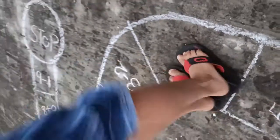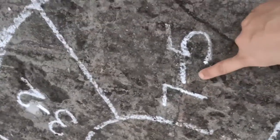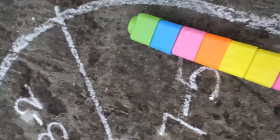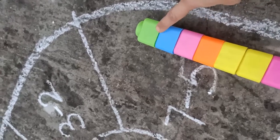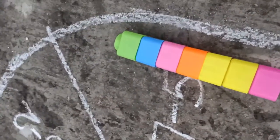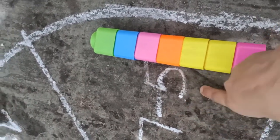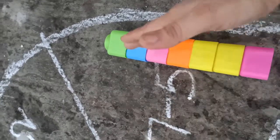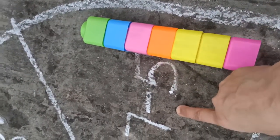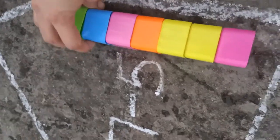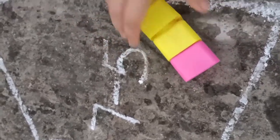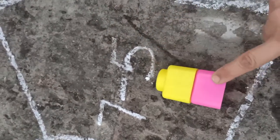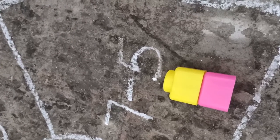So jump in the next box. यहाँ पर क्या लिखा है? Seven minus five. So minus — सबसे पहले हमने sign देखने हैं ना, minus का. So minus means हमने take away करने हैं, यानि निकालना है. So here I take seven blocks: one, two, three, four, five, six, seven. Now how many blocks are there? Two blocks are there. So answer is two.